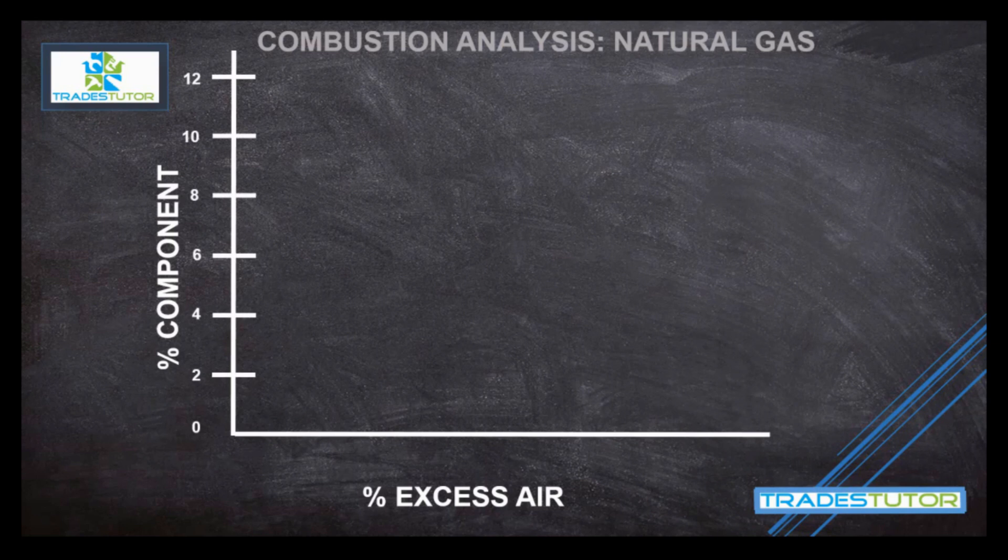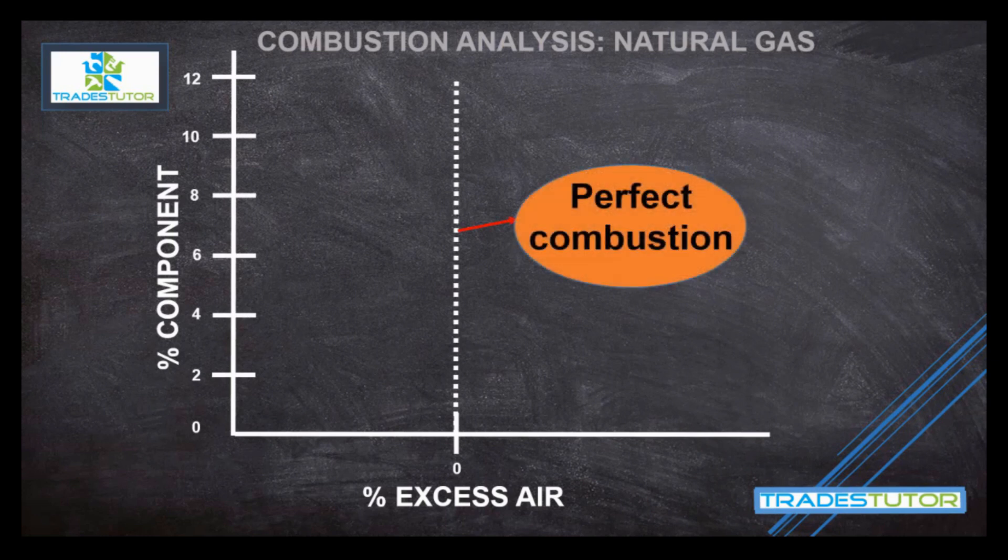Now the excess air, coming back to that, we start here at the zero point. If we drew a line right up the middle, what that line represents, anywhere on that line, what we'd have is perfect combustion. That's where the exact amount of air is introduced with the gas to combust. There's nothing extra, no extra air molecules. There's no excess air, we would say.